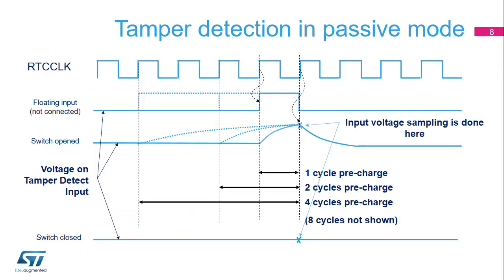This figure illustrates tamper detection using the internal pull-up. The internal pull-up can be applied for 1, 2, 4, or 8 cycles. If the switch is opened, the level is pulled up by the resistor. If the switch is closed, the level remains low. The input voltage is sampled at the end of the pre-charge pulse.